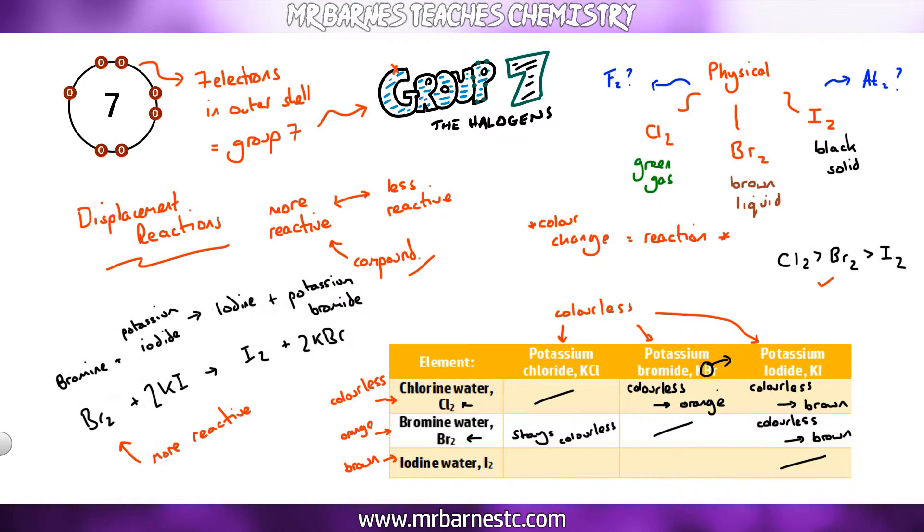Therefore bromine is more reactive than iodine and I can check that by adding iodine into both potassium chloride and potassium bromide. There is no colour change. If there's no colour change it means it is less reactive than both of them. So it becomes less reactive as you go down group 7.